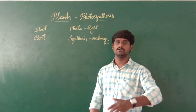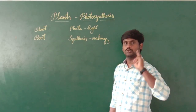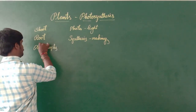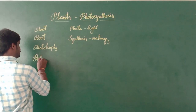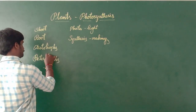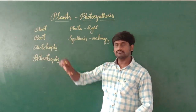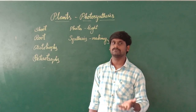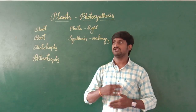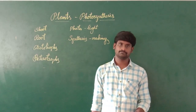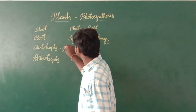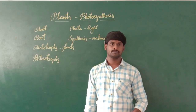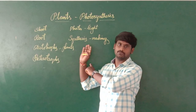Some organisms can prepare their food and some are unable to prepare their food. In our nature, there are two types: one is called autotrophs and another one is called heterotrophs. Autotrophs are the organisms which can prepare their food. Heterotrophs are the organisms which cannot prepare their food. Examples of autotrophs are plants — but not all plants, only the green plants. Why can only green plants prepare the food? That will be explained as the topic goes on.